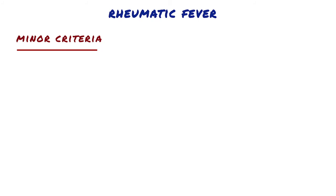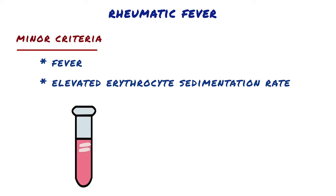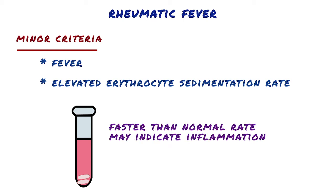Minor criteria are non-specific and include fever and elevated erythrocyte sedimentation rate, or ESR. Erythrocyte sedimentation rate is a type of blood test that measures how quickly erythrocytes settle at the bottom of a test tube that contains a blood sample. Normally, red blood cells settle relatively slowly, and a faster-than-normal rate may indicate inflammation in the body.